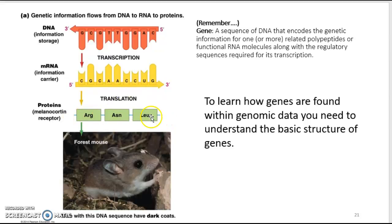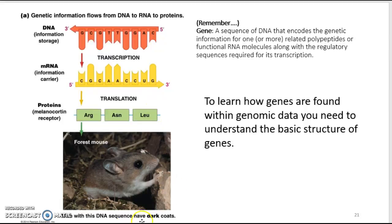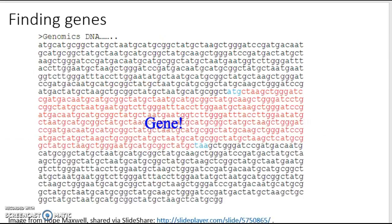The messenger RNA transcript is then used to produce a protein, also called a polypeptide — a sequence of amino acids such as arginine, aspartate, and leucine. This is the process of translation, and this flow of genetic information — or gene expression — gives rise to a phenotype, such as dark coat color in this mouse.